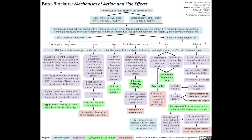In the kidneys, beta 1 receptor antagonism reduces the release of renin, which reduces the creation of angiotensin 2 and aldosterone. This in turn leads to reduced absorption of sodium and water in the nephron, which results in increased loss of sodium and water in the urine, further reducing total blood volume, further reducing stroke volume and cardiac output, leading to the consequences of reduced cardiac output previously explained.